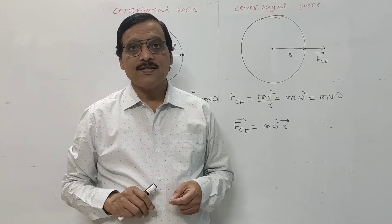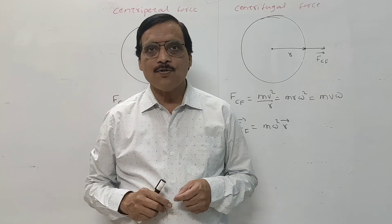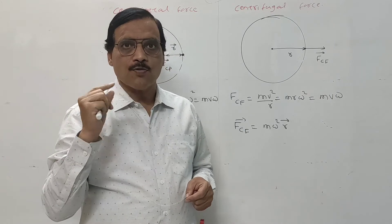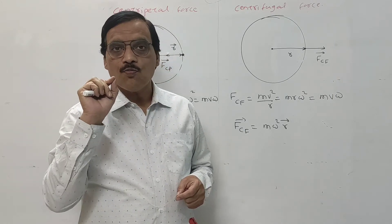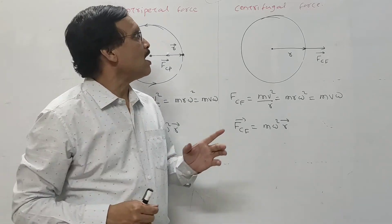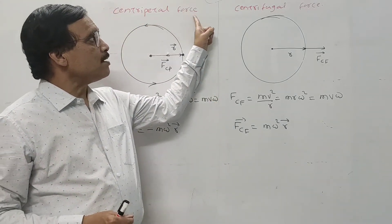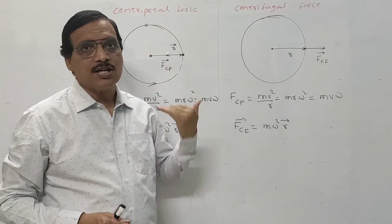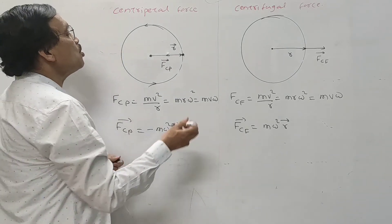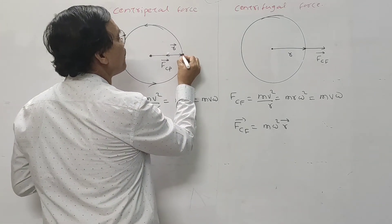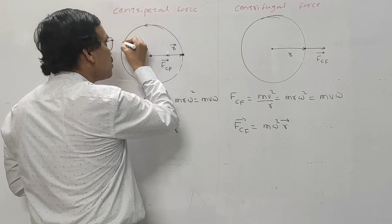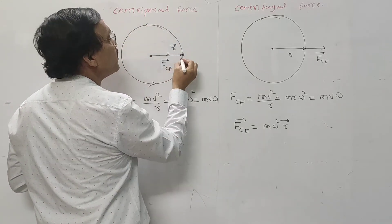Here we see centripetal force and centrifugal force. During circular motion, two forces act on a particle. The particle moves along the circumference of the circle, and two forces act on it — one directed inward and one directed outward.